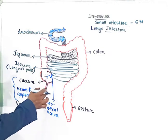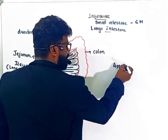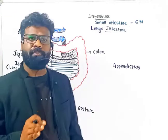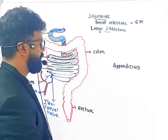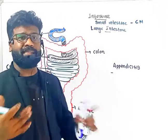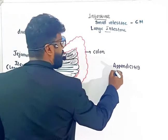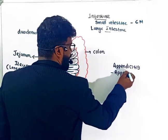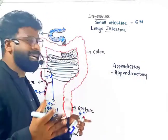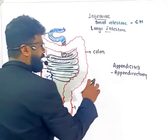Infection and inflammation of the vermiform appendix is called appendicitis. The ultimate treatment is surgical removal of the vermiform appendix, which is called appendicectomy.